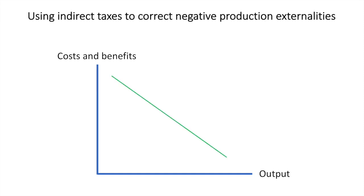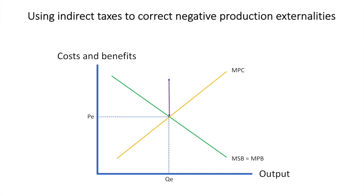The free market equilibrium occurs where marginal private benefit intersects marginal private cost. Since there is a negative production externality, marginal private benefit and marginal social benefit are the same. At this point, there is a marginal external cost of AB per unit. Therefore the marginal social cost is above the marginal private cost curve. This product is overproduced and results in a negative production externality such as air pollution and other environmental damage.